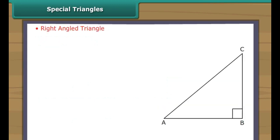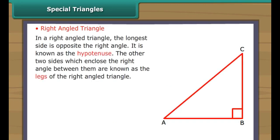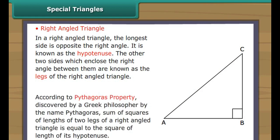Right-angled triangle. In a right-angled triangle, the longest side is opposite the right angle and is known as the hypotenuse. The two sides which enclose the right angle between them are known as the legs of the right-angled triangle. According to the Pythagoras property, discovered by Greek philosopher Pythagoras, the sum of squares of lengths of the two legs equals the square of the length of the hypotenuse.